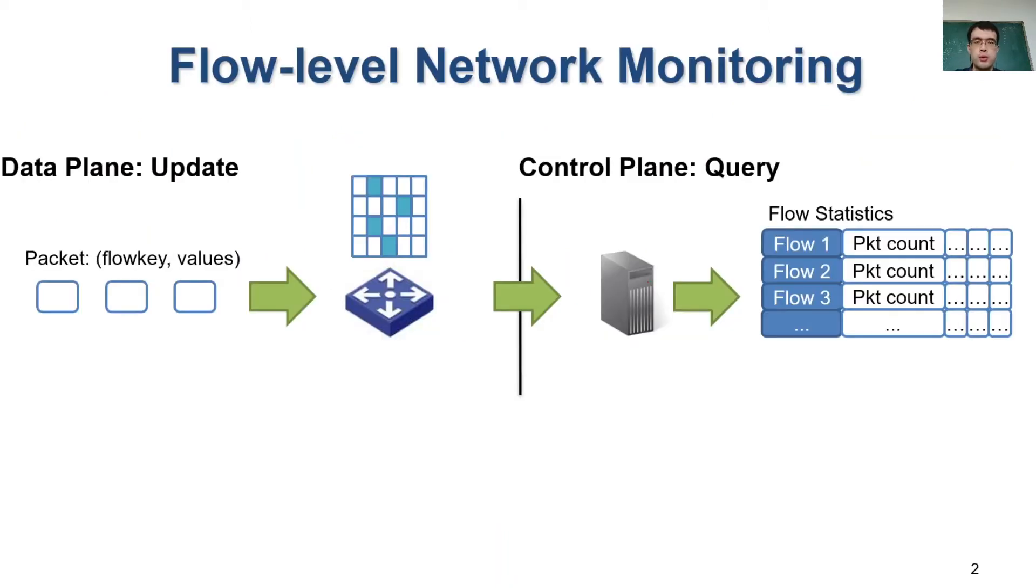In this paper, we address flow-level monitoring, which is important for network management. We model each network packet as a key-value pair. The key identifies the flow this packet belongs to, and the values indicate the information carried by the packet. The monitoring groups packets into flows based on the flow key and computes statistics such as packet count and byte count for each flow.